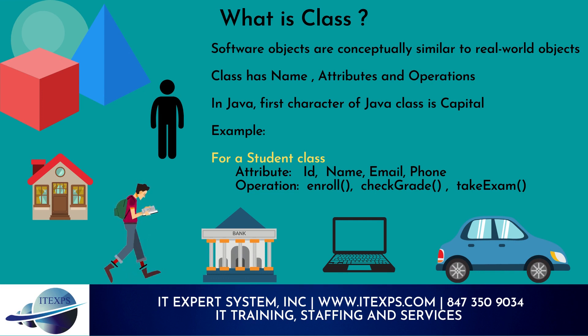In Java, the first character of a class name is capital. For example, for a Student class, attributes include: id, name, email, phone. Operations include: enroll, check grade, take exam.